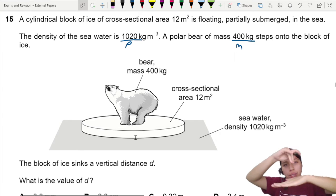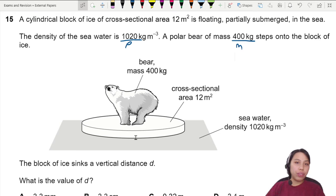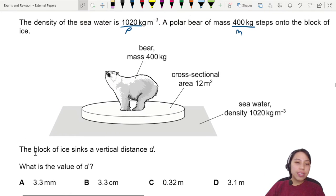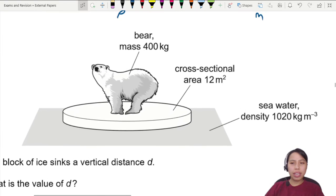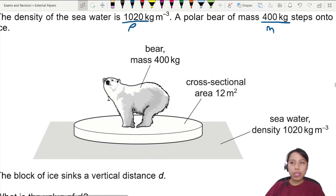So once you put something on a cylinder floating in water, you will press it down. The polar bear is heavy, so the block of ice now sinks a vertical distance d. What is the value of d? If you find it hard to imagine because this is a 3D picture, maybe we can draw a 2D to help us understand a little bit.